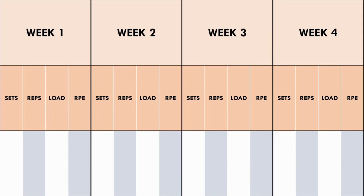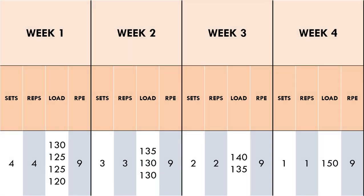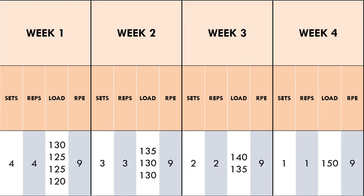For example, we may start with 4 sets of 4, then 3 sets of 3, 2 sets of 2, and finally 1 set of 1. From here we may prescribe a higher RPE each week as loads will naturally increase since sets and reps decrease. For example, we may prescribe an RPE of 9 each week, because 4 sets of 4 at RPE 9 will use a lighter load than 1 set of 1 at RPE 9. It should be understood that very high RPEs shouldn't be used for extended periods of time, as performance will likely plateau and injury risk will increase.